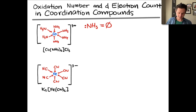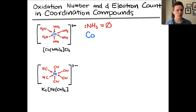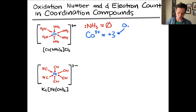This means that the cobalt must be entirely responsible for the charge of the complex, and the charge of the complex is plus 3. So the cobalt must have a charge of 3 plus. The oxidation number of the cobalt in this complex — ON for short — is plus 3.